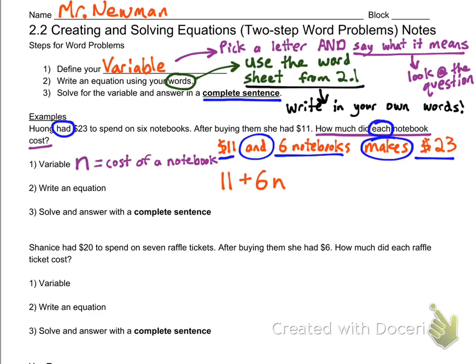Six notebooks—I'm looking for the cost of six notebooks, so I'm going to do six times N. It's okay if you have uppercase and lowercase, but let's make them the same. Six times the cost of each notebook shows you the total cost of all the notebooks. 'Makes' means add, and 'are' means equals, so you get $23.